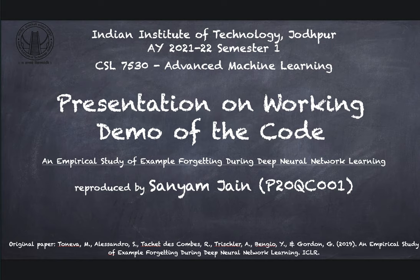I am going to present the work of Maria Chuneva and co-authors titled An Empirical Study of Example Forgetting During Deep Neural Network Learning. This was presented in ICLR 2019 and had opened a new line of work for other researchers to work on catastrophic forgetting.